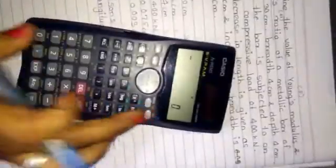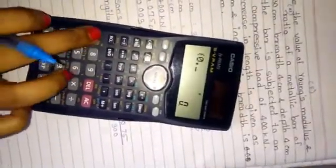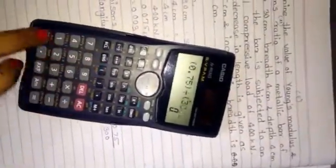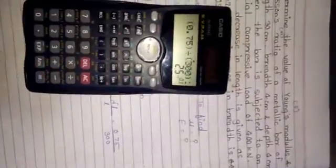We have change in length, that is 0.75 mm, or original length, 300 mm. Calculate it all. And the answer is 2.5 × 10⁻³, which is nearly about 0.0025.